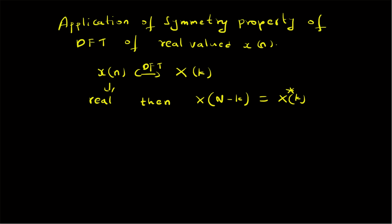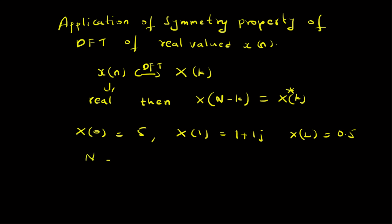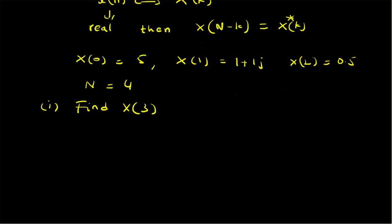Consider the problem where the DFT sequence is given as: X of 0 equal to 5, X of 1 is equal to 1 plus j, and X of 2 is given as 0.5. The length of the DFT sequence is given to be 4. Now, we have to find the last value, that is we have to find X of 3.